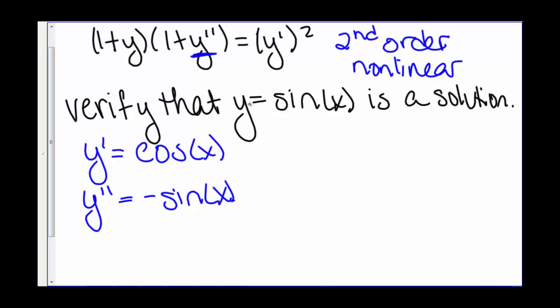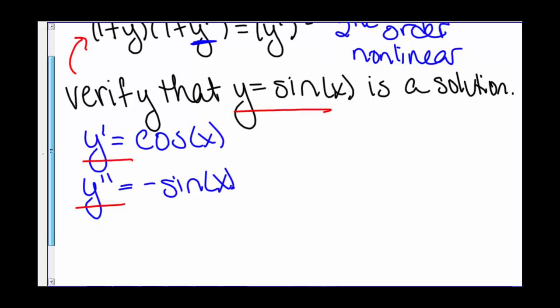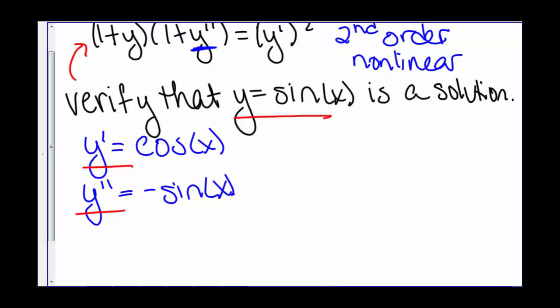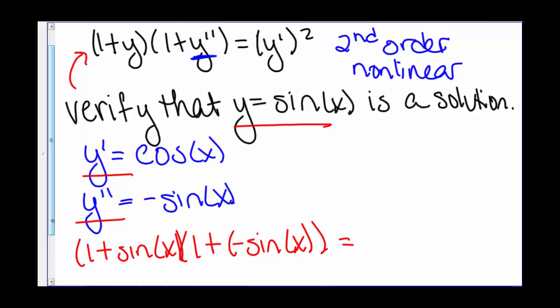Now we need to plug y, y', and y'' back into our differential equation. When we do that, we have (1 + sin(x)) times (1 + negative sin(x)), and that should equal cos²(x).